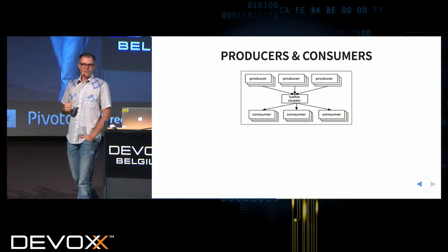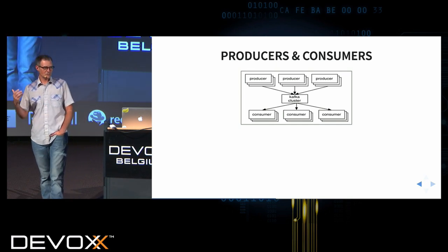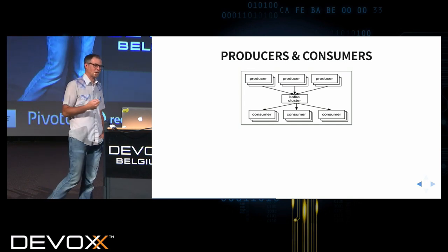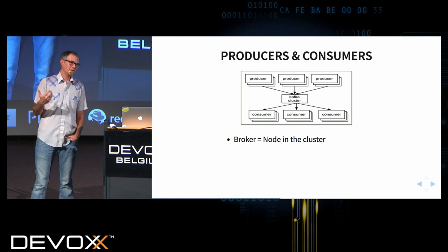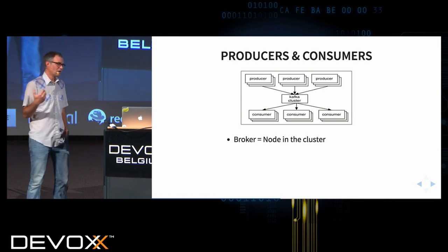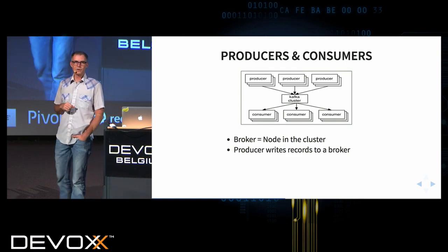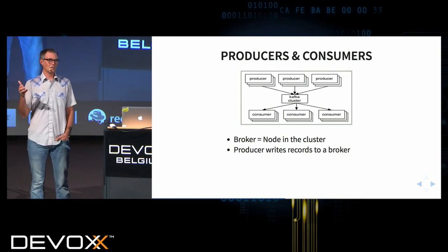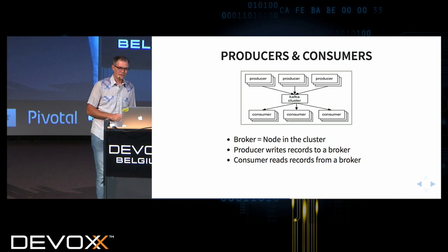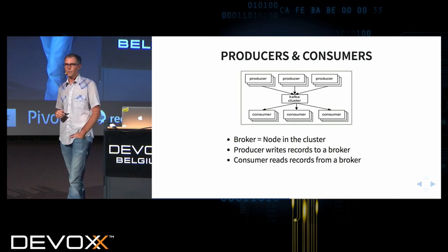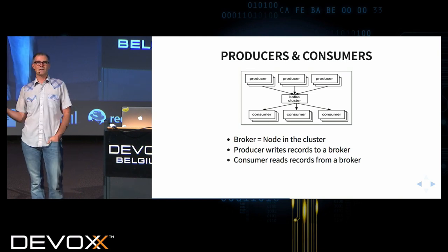Now for some very messaging-system-oriented terminology: producers and consumers. If you've worked with messaging systems, you're definitely familiar with this. In Kafka, a broker is a node in the cluster — just another word for node. A producer writes messages to the cluster, writing messages to a broker. A consumer reads records from a broker — and this is actually important, because the consumer is not being pushed messages.